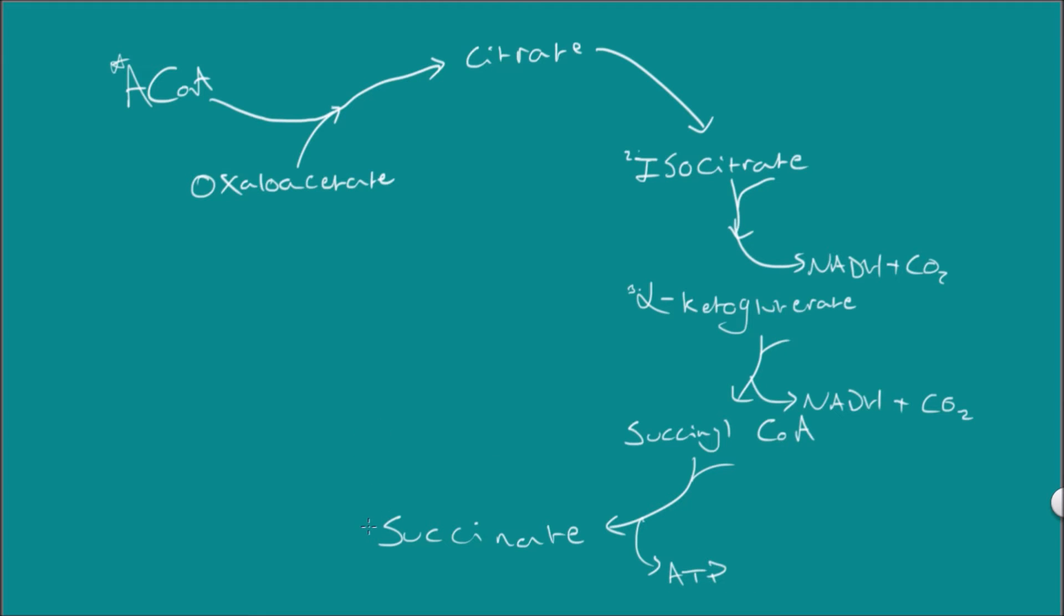From the succinate this is converted into fumarate, and then we get another side product being formed. So there's a bit of a trend in these first four. From step two from isocitrate there is a side product being made in every single step.